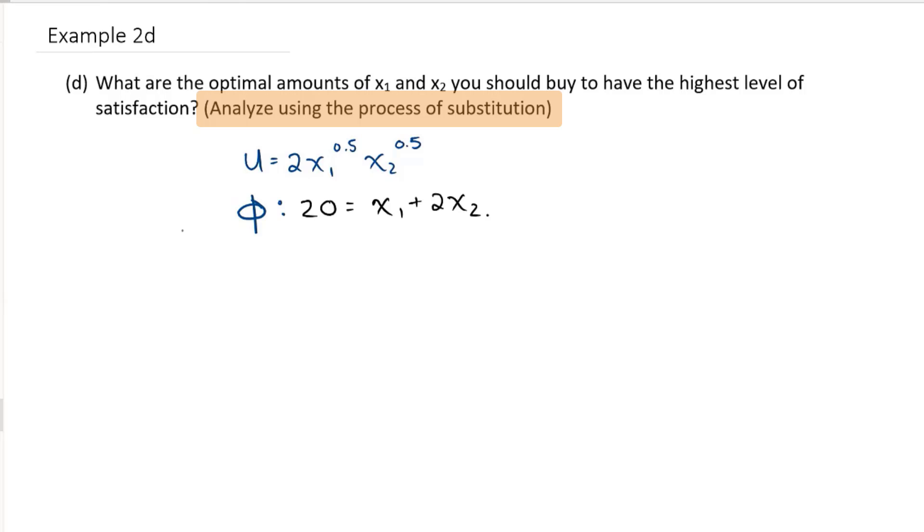So now what we're going to do is take the process that we did in the previous example. We call that process substitution. And we're going to use this relationship and isolate either X1 or X2 and substitute it into this utility equation.